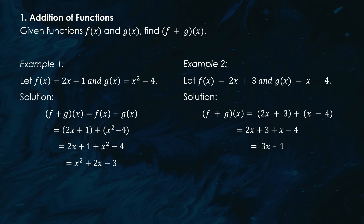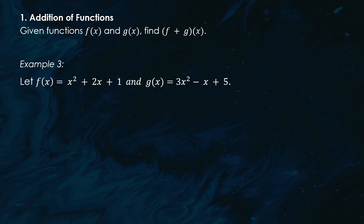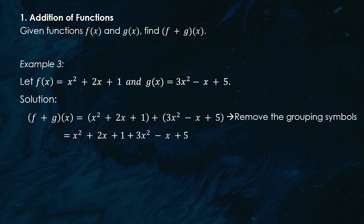Another example: if f(x) = x² + 2x + 1 and g(x) = 3x² − x + 5, we add them by rewriting all the terms: x² + 2x + 1 + 3x² − x + 5. Removing grouping symbols and combining like terms, the sum of f(x) and g(x) is 4x² + x + 6.